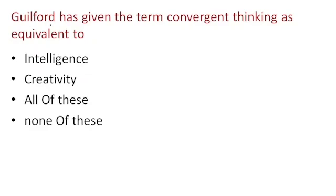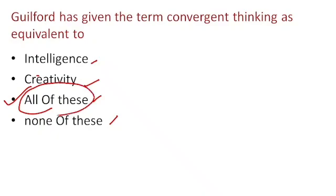Guilford has given the term convergent thinking as equivalent to — intelligence, creativity, all of these, or none of these? This refers to both intelligence and creativity, hence 'all of these' is the correct answer.